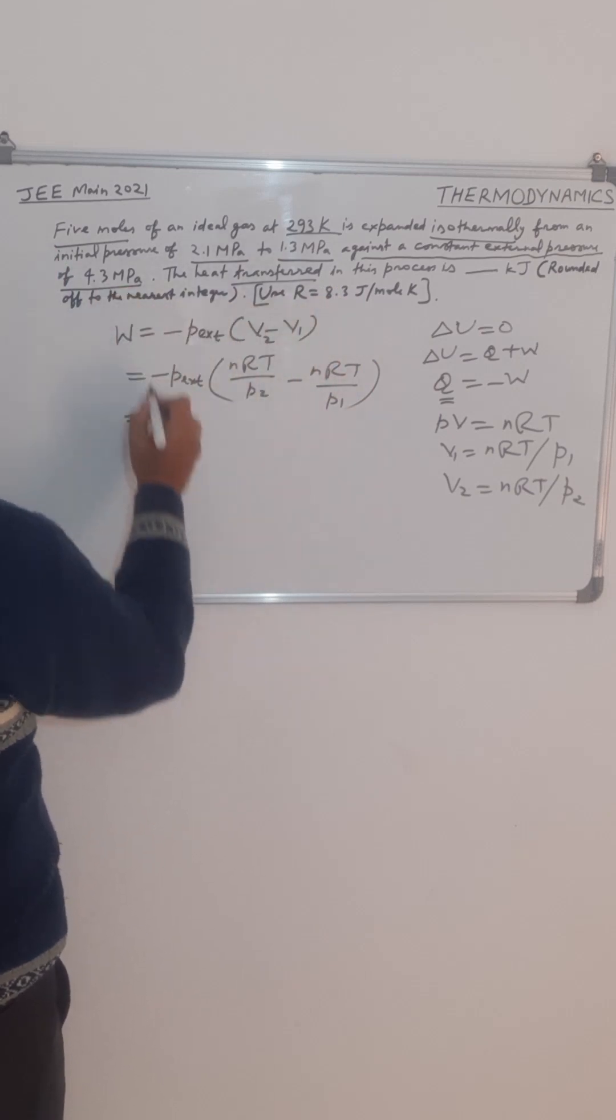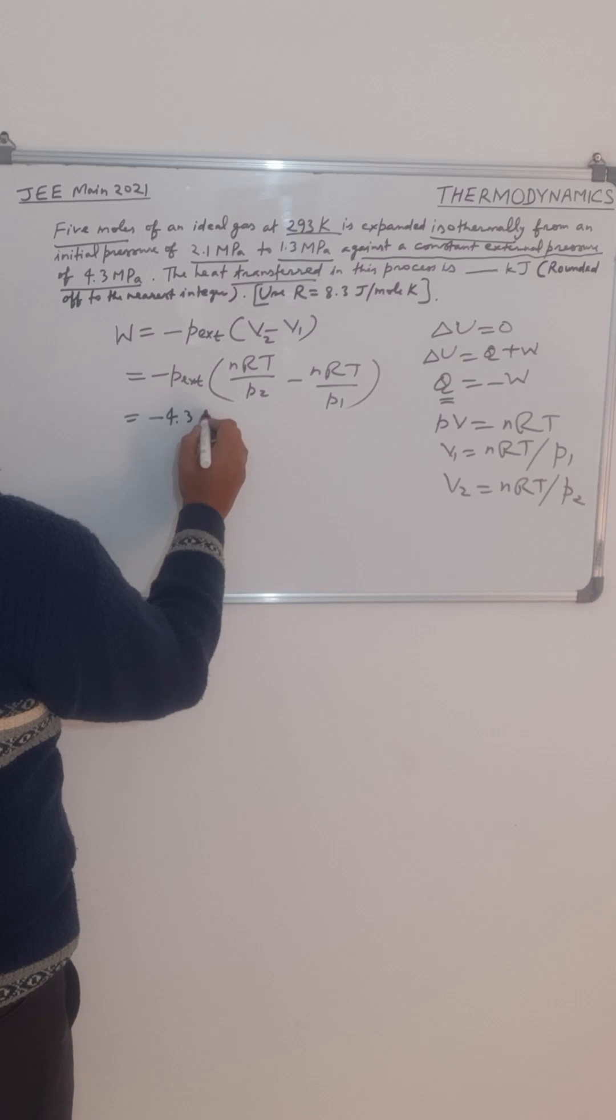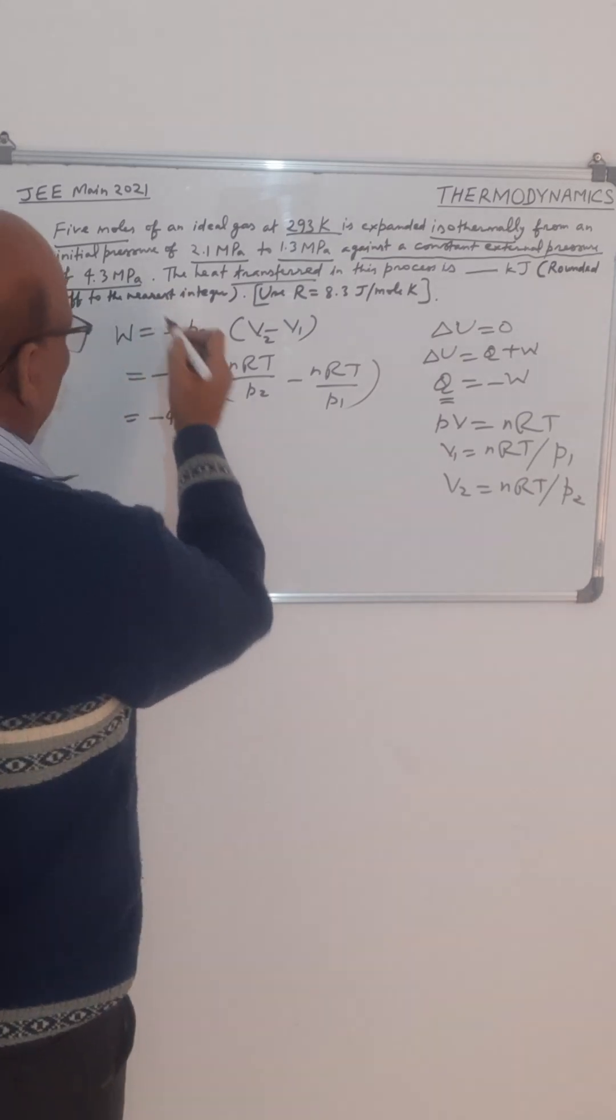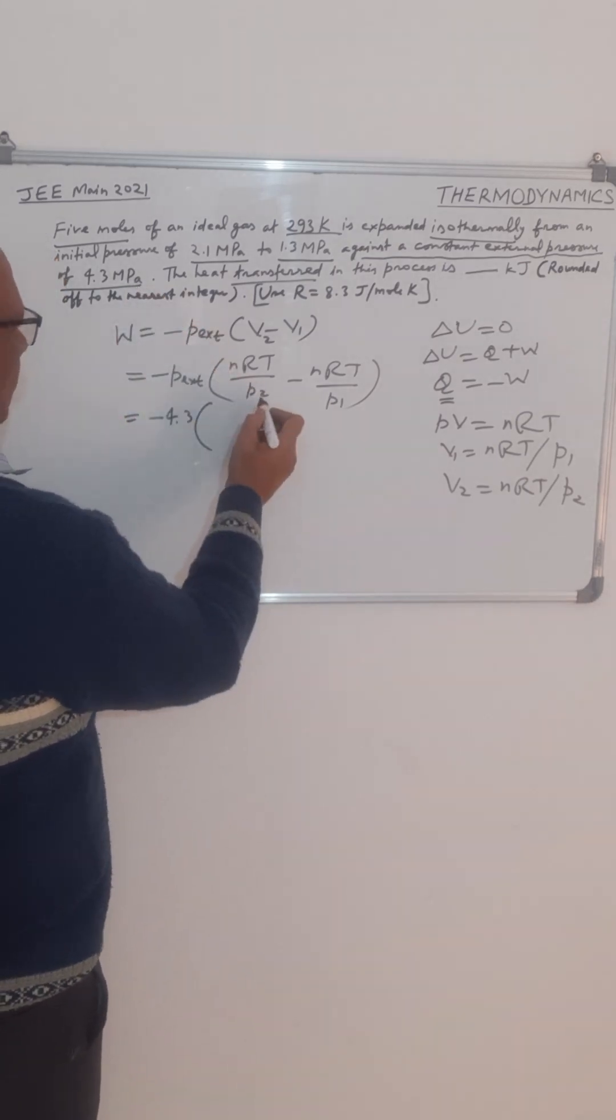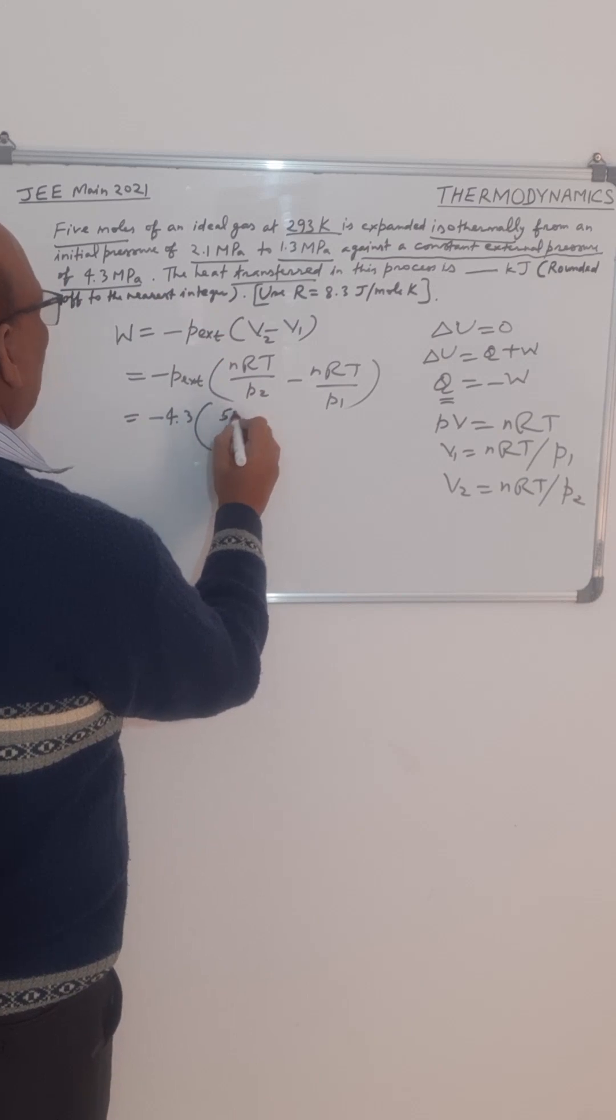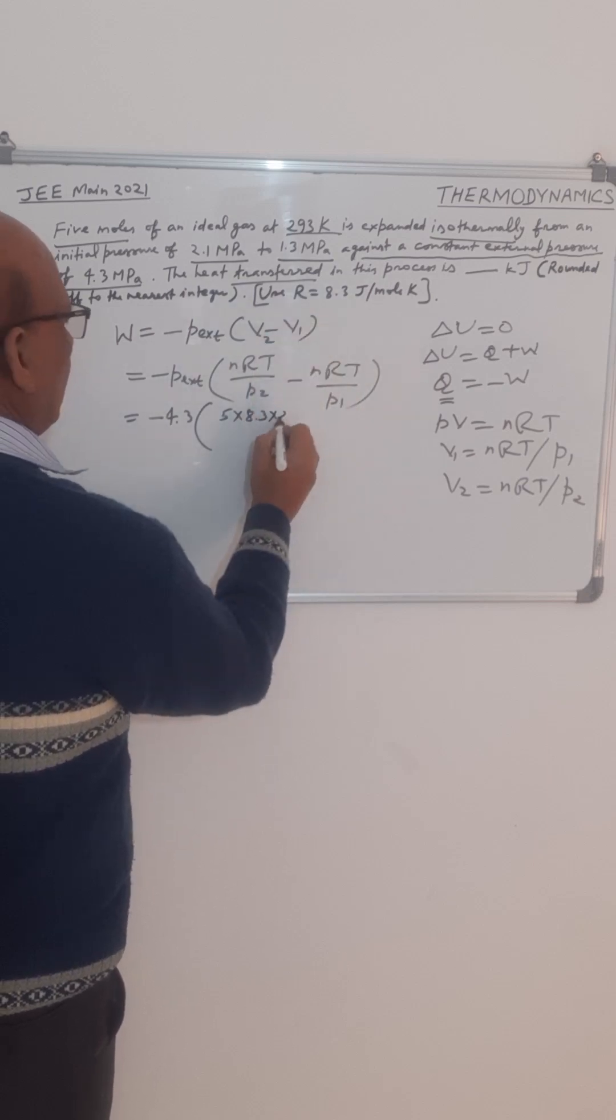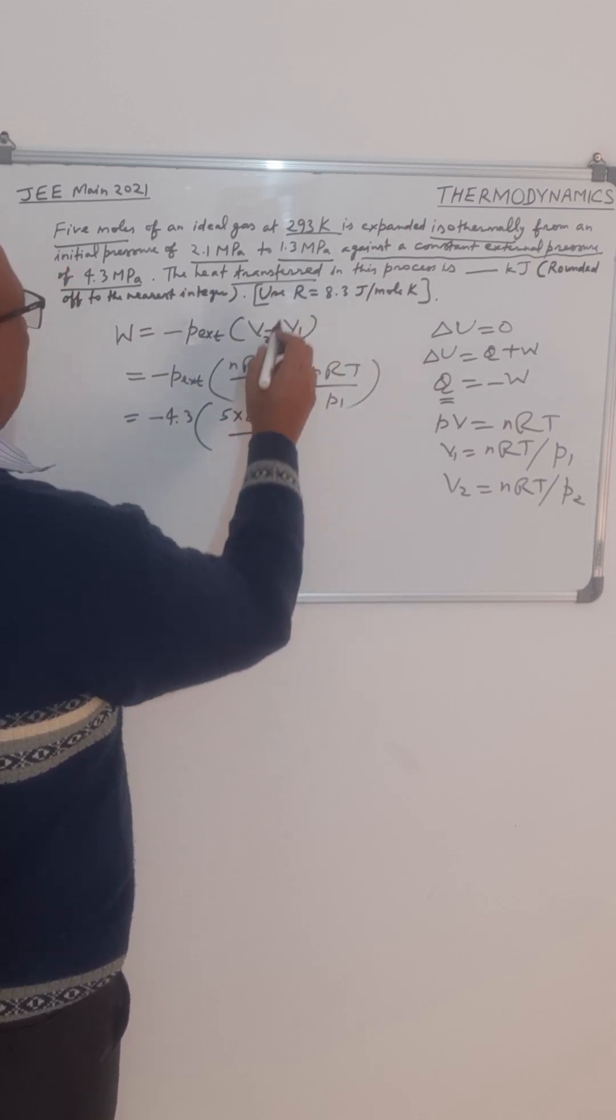The external pressure is 4.3 MPa, so minus 4.3. We need not change the unit because this pressure unit will get cancelled out. Into NRT, N is 5 moles, into R is 8.3 Joule per mole Kelvin, into temperature is 293 Kelvin upon P2.